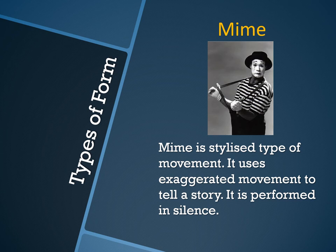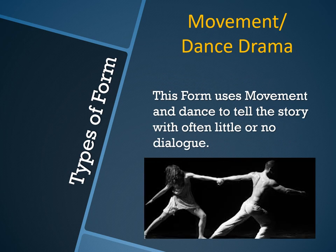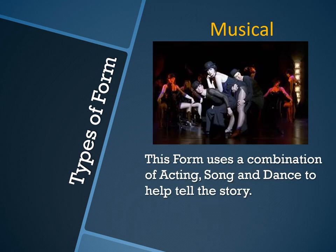Mime involves acting without talking — the actor uses body language more than words. Monologue uses traditional dialogue to tell the audience what is going on in the character's head. Movement involves different kinds of motion — we use dance and attack movement — movement is very important in drama. Drama is about movement.